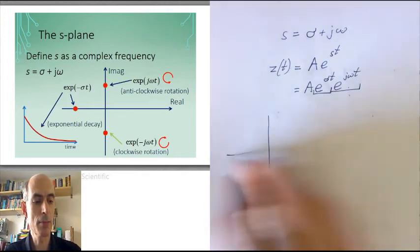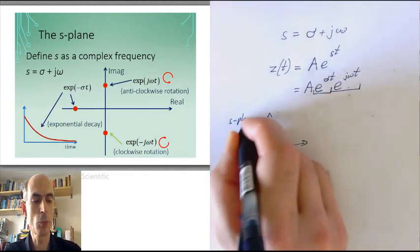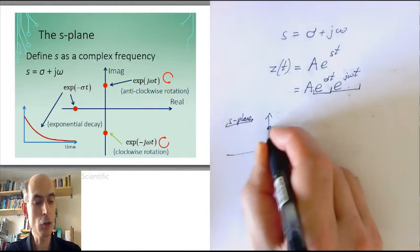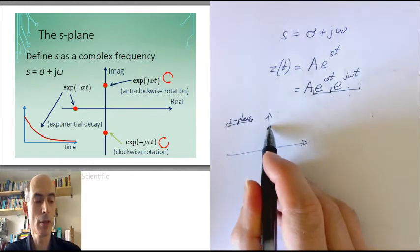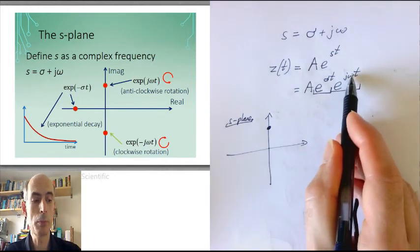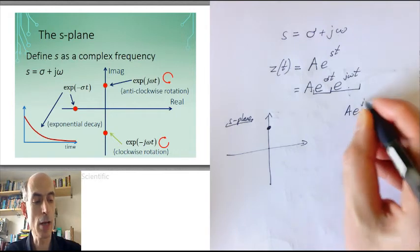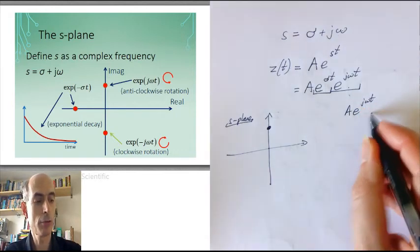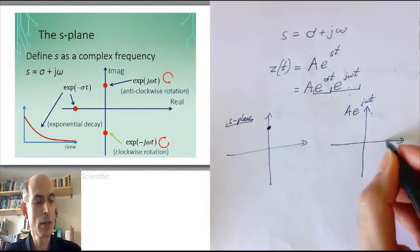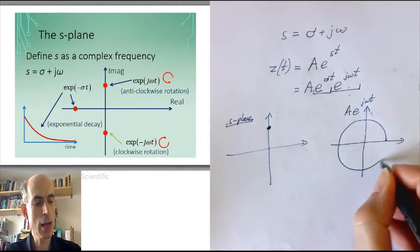If I have an s-plane here, that's the plane on which I write these complex frequencies. If I had a complex frequency at that point there, then sigma, that's the real part, would be zero. j omega would be positive. I would have something of the form a e to the j omega t, and if I plotted how that behaved as a function of time, that would be an oscillation that went round anti-clockwise.